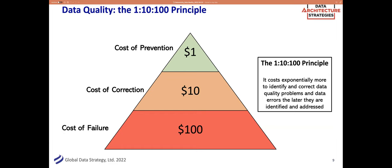People like Larry English and Tom Redmond recognized that the same principle applies equally well to data as it does to a manufactured product. If you have quality problems with data and can rectify those problems before the data is even created by anticipating issues, you prevent problems. If you load that data into a data warehouse and then spot problems, you can correct it — but it'll cost a lot more. If you've already passed that data out to consumers and they spot the problem, it costs even more because the data is distributed much more widely. Moreover, if people are working with poor quality data and making decisions on that basis, it's doing damage to the organization — bad data leads to bad decisions. That increase in cost is exponential.